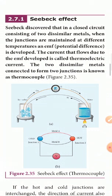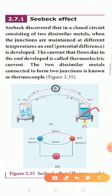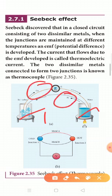In the Seebeck effect, there are two junctions. One junction is in hot water and the other is in ice cubes. In this setup, there is a galvanometer connected with two wires — one copper wire and one iron wire.